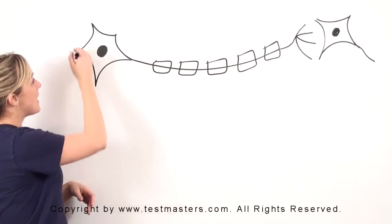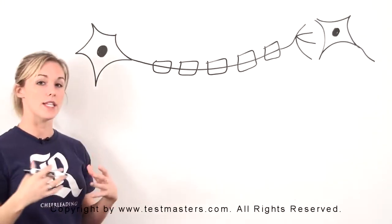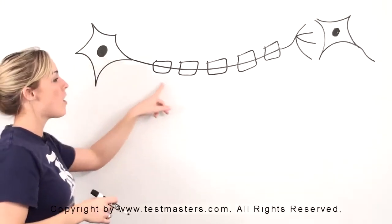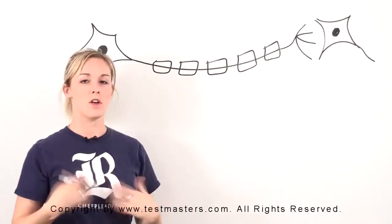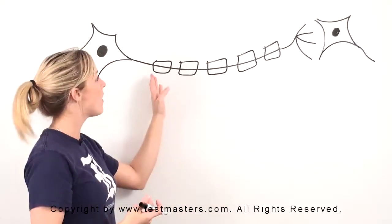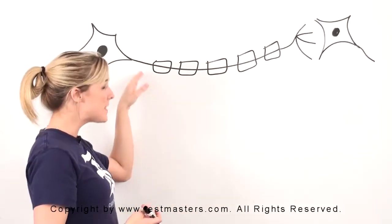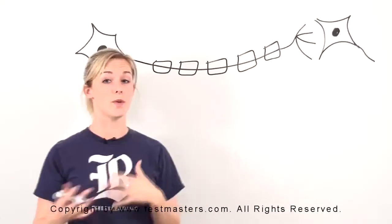All these different things are called dendrites, and they're going to receive different signals. Then you've got your long axon here. What I've drawn on here are your myelin sheaths. This allows for something called saltatory conduction, which we'll talk about, but this is how basically one cell talks to another cell.